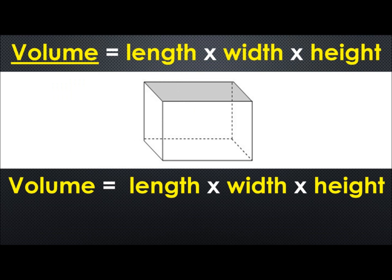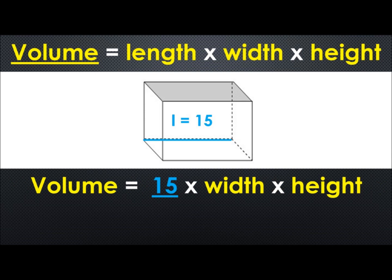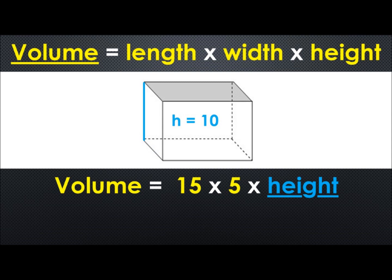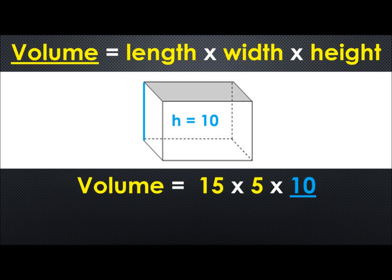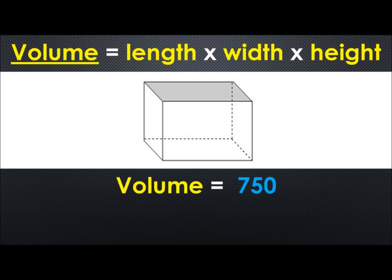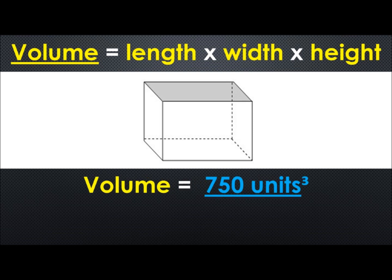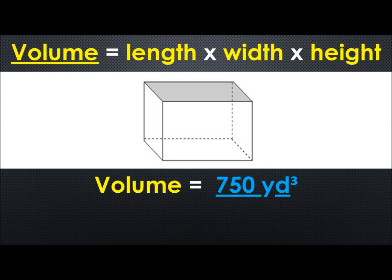Now let's put in an example. Let's have our length be 15. Let's have our width be 5. Let's have our height be 10. We plug all those into our formula 15 times 5 times 10 gives us 750 and that will be 750 units cubed. If we were in the United States system it would be 750 yards cubed or feet cubed or inches cubed.